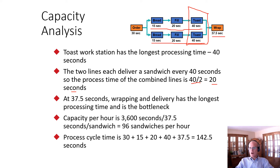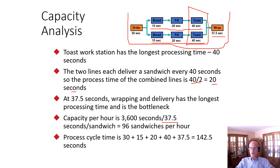Because only one person handles wrapping and delivery, the wrapping step at 37.5 seconds becomes the bottleneck for the overall system. The capacity per hour is 3600 seconds divided by 37.5 seconds, which equals 96 sandwiches per hour. So if the system is always busy and has sufficient orders, the whole system can produce 96 sandwiches per hour.